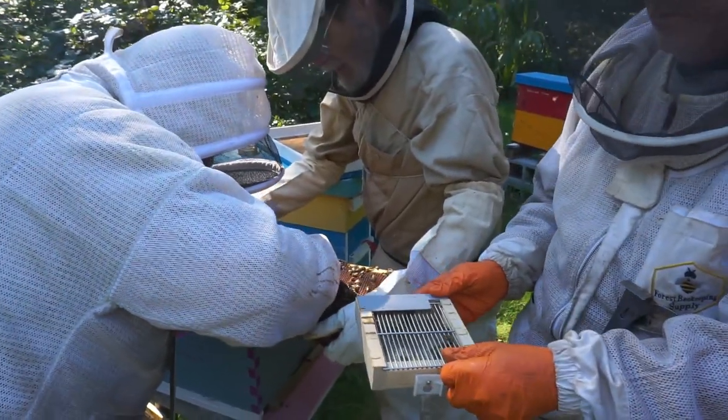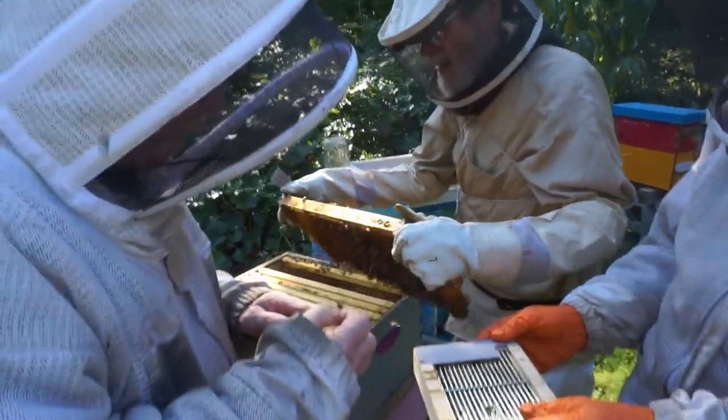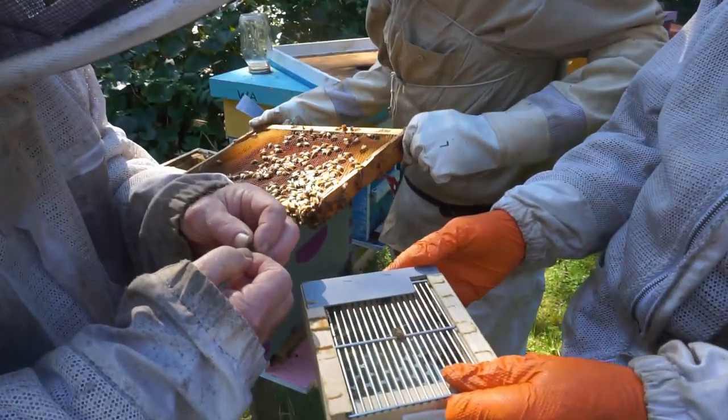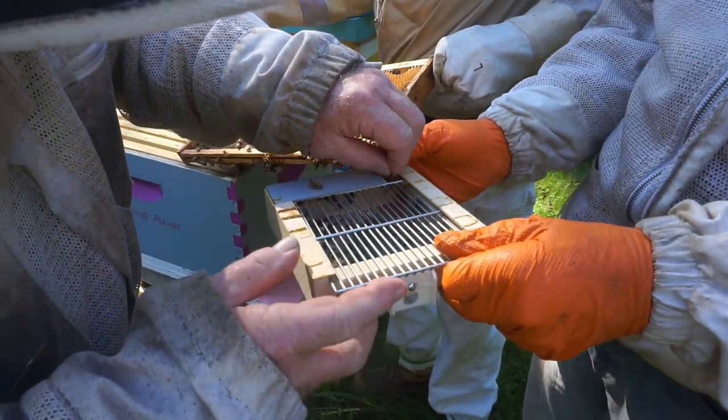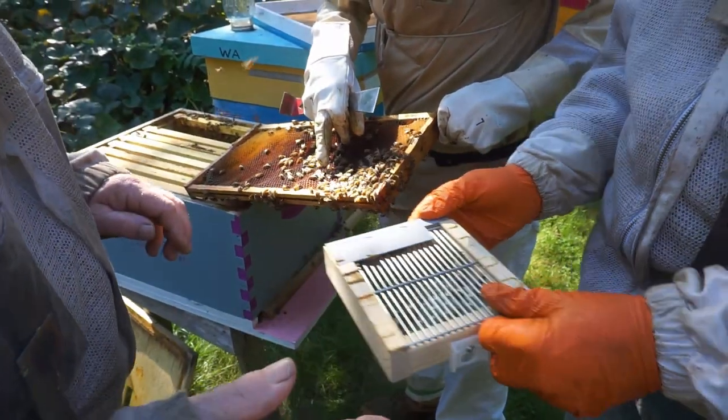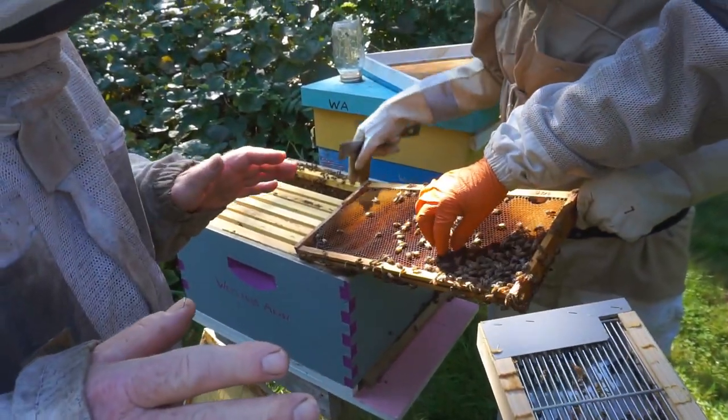So Bob, you want to explain what you're doing to the camera? Yeah, what we're doing here is we're going into our hives, identifying drones and putting them in this drone cage. You want the mature drones.